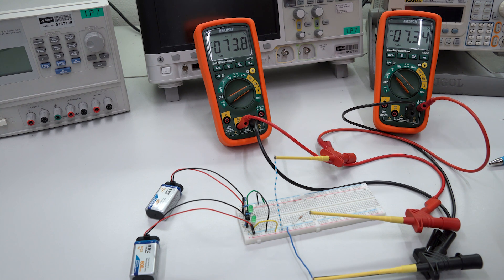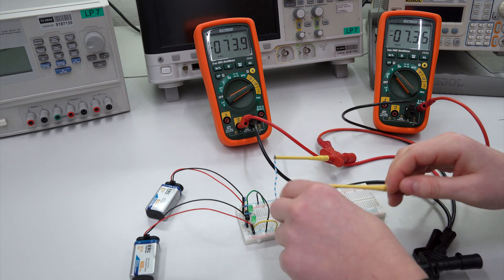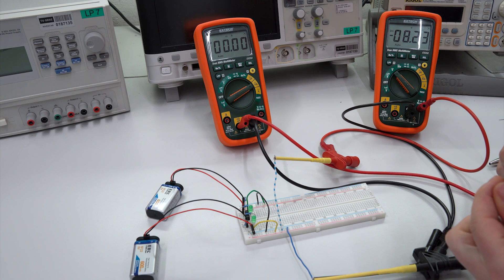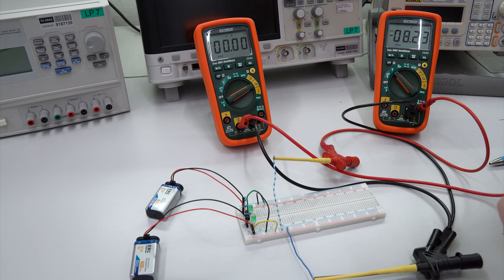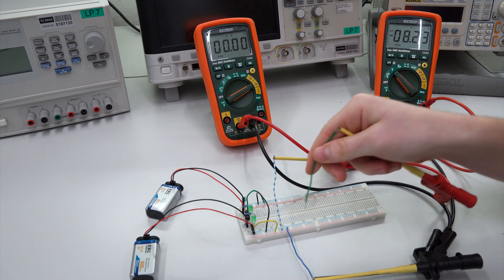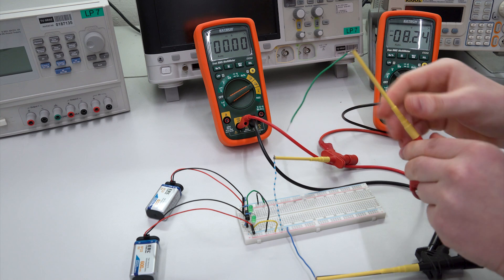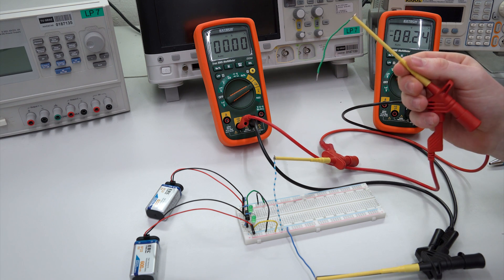But again it's fine. The overcurrent protection did not trigger. So everything as expected. So let's now produce a clean shortcut. To see if the overcurrent protection will eventually step in and limit the current. So I've now removed the resistor and replaced it with a cable.